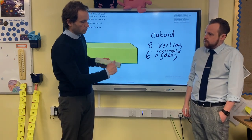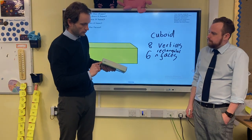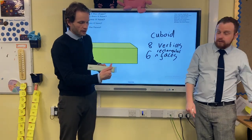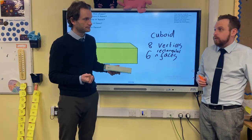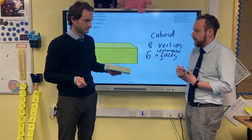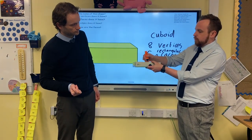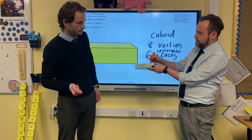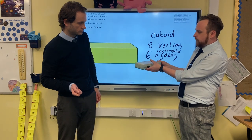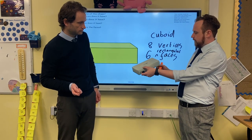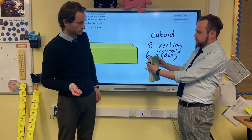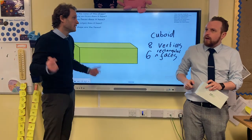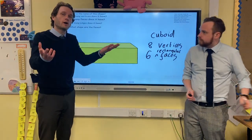Now the edges — the lines joining the faces up. We've got to be really careful when counting these. It helps to mark each one as you go: one, two, three, four on this side, then five, six, seven, eight, nine, ten, eleven, twelve. So there are 12 edges. It's easy to get in a muddle counting edges — don't worry, just try.